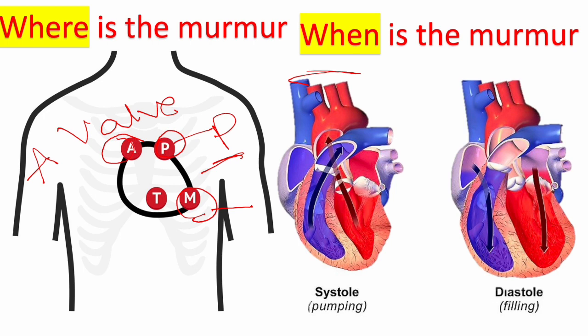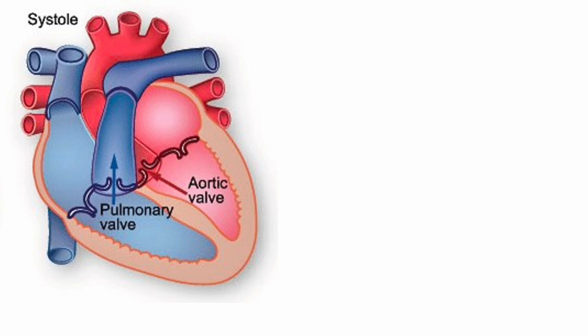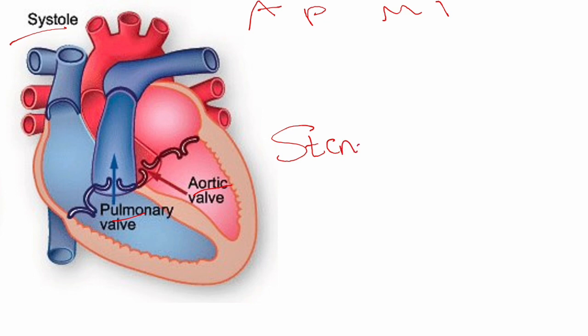Now that we've answered where the murmur is best heard and identified which valve is affected — aortic, pulmonary, mitral, or tricuspid — we need to know whether it's stenosis or regurgitation. To figure that out, you need to know when the murmur occurs. During systole, which valves should be open? The aortic and pulmonary. So if they are stenotic, that will cause a murmur.